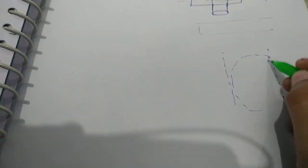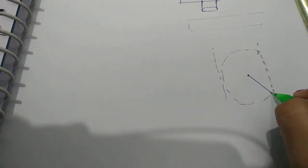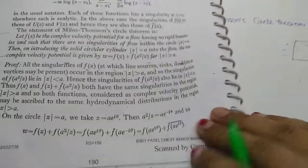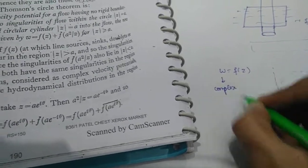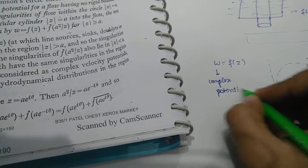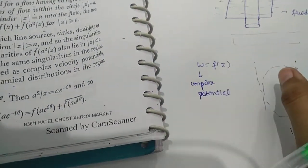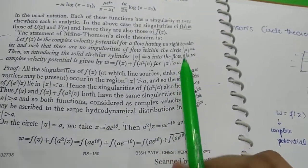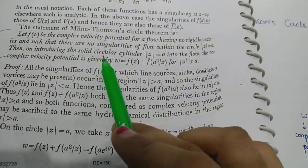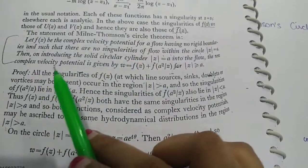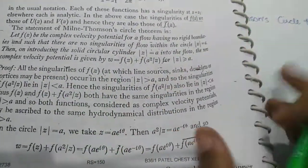There is a circle with radius a, and this circle has no singularities inside it. In complex analysis, a singularity point is where our function is not analytic. The complex potential w = F(z) is analytic, so the points where it is not analytic are singular points. Within the circle, there are no singularities, so it is analytic.